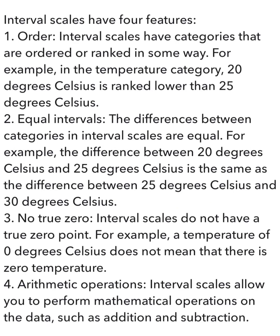Features of Interval Measurement Scale. The first feature is Order. Interval Scale has categories which we present in order and rank. For example, with temperature, we rank 20 degrees Celsius as lower than 25 degrees Celsius. The second feature is Equal Interval — the difference between interval scale points is equal. For example, the difference between 20°C and 25°C is the same as the difference between 25°C and 30°C.